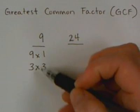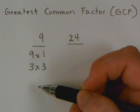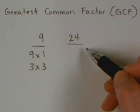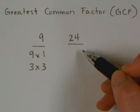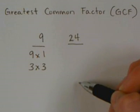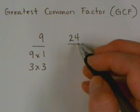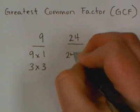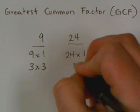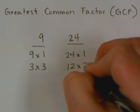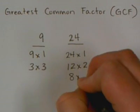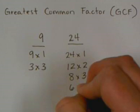Ways that I can multiply to equal 9 are 9 times 1 and 3 times 3. They really need to make sure that they have all their factors listed for each number. Now for 24, they could say 24 times 1, 12 times 2, 8 times 3, and 6 times 4.